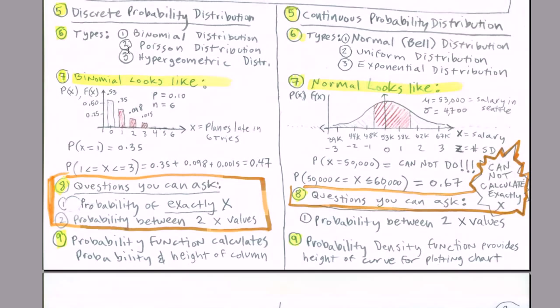Now last chapter, we talked about binomial, Poisson, and hypergeometric. For example, the binomial distribution looked like this. The height of the columns were both the height of the column and the probability. That height represented the probabilities. And as such, we were allowed to say, what's the probability of exactly one plane late in six tries? It was 0.35. That came from the height of this. We were also allowed to ask, what's the probability that random variable x counting late planes in six tries was between one and three? We simply added the height of the columns or the probabilities to get our total probability.